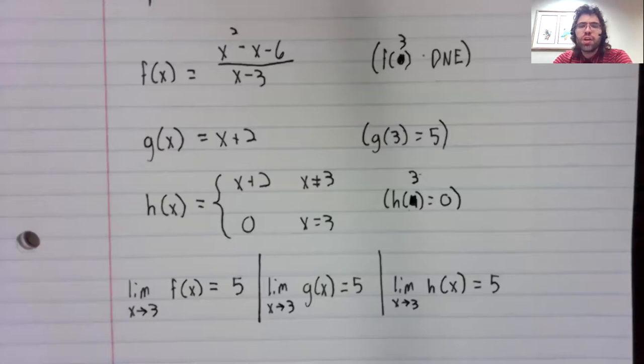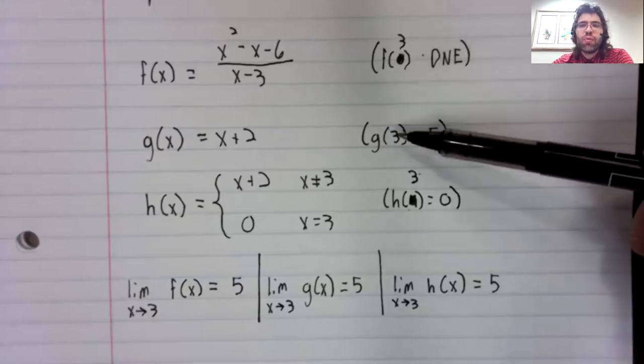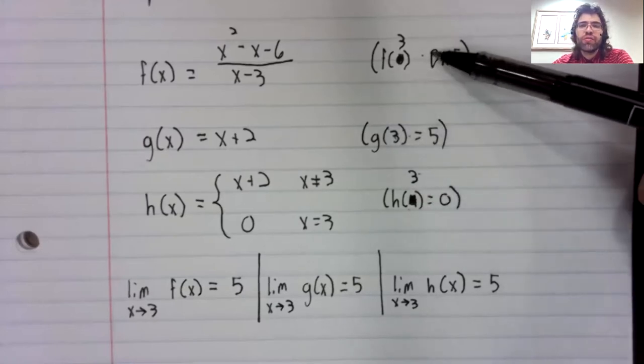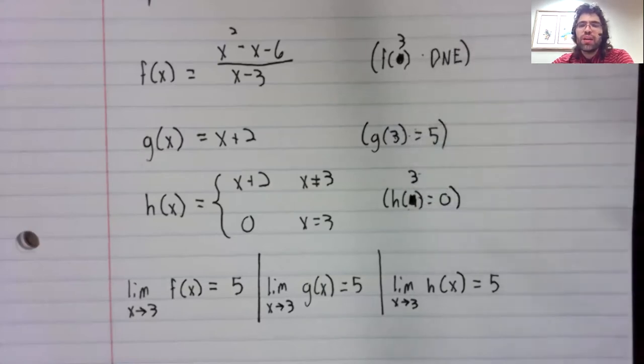And these are our limits. And the fact that at three itself, these functions take on different values did not affect the limit. If you take the limit as x approaches three, x does not equal three. And similarly for any number, if you take the limit as x approaches c, what happens at c doesn't matter. Only what happens near c.